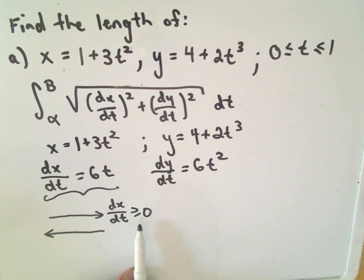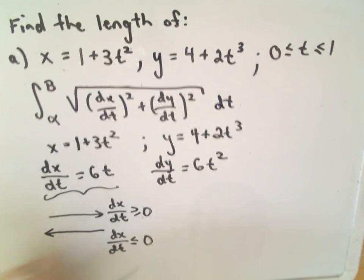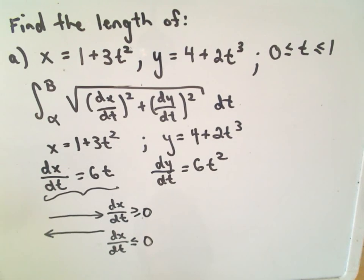So and the idea is if dx dt is greater than or equal to 0, then we know that the curve is going to be moving to the right. We have to be a little careful. If dx dt is 0, obviously it's not moving at all. But the idea is we want it to not change signs. So likewise, if dx dt is strictly negative over that time interval or equal to 0 possibly, then we know that the curve is moving to the left.